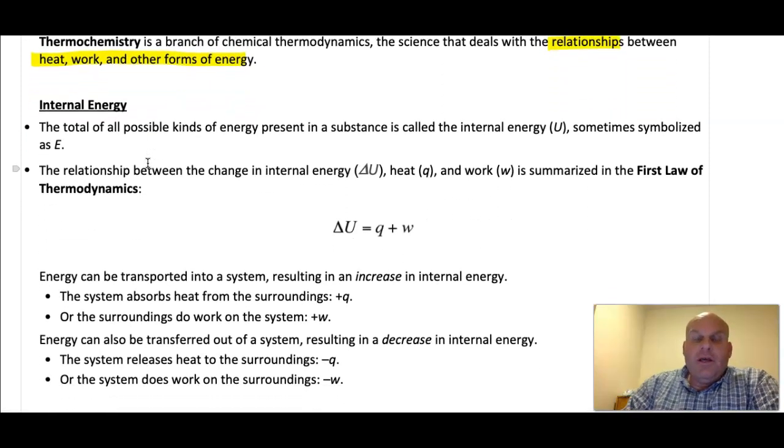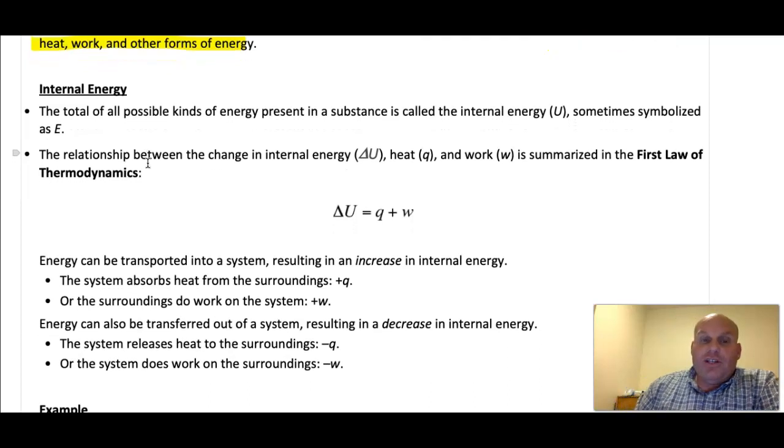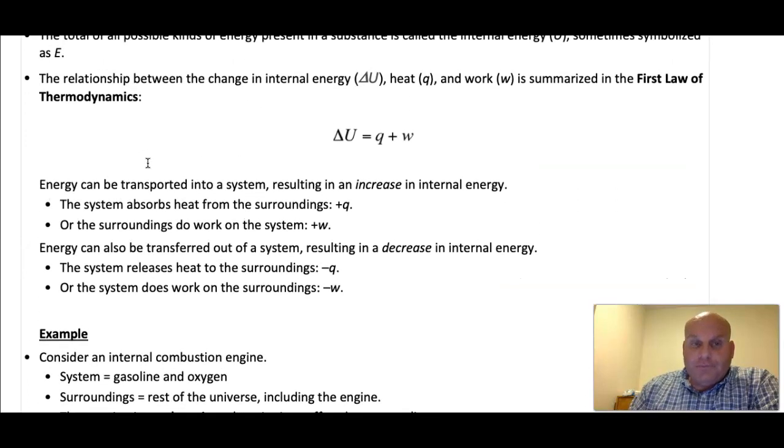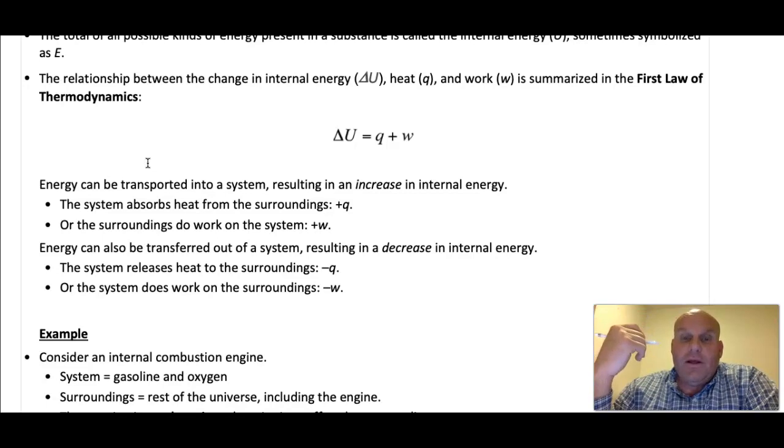But first, let's talk about internal energy. So you can see what internal energy is represented by here. It's the total of all possible kinds of energy present in a substance. And this is either delta U or sometimes symbolized with a capital E. You can see here the relationship between internal energy, heat, and work is summarized by what's known as the First Law of Thermodynamics. And there's the equation there. So what does that mean? What does that look like?